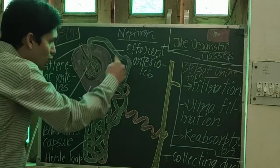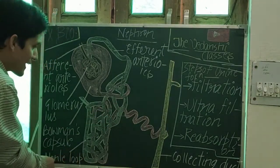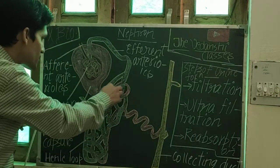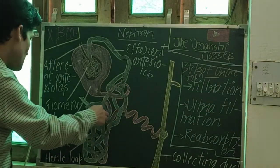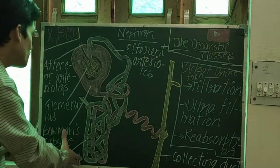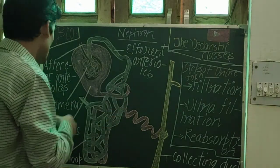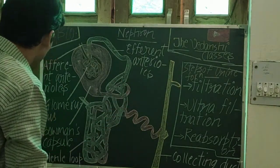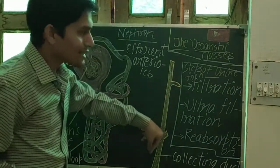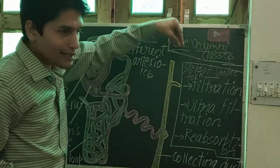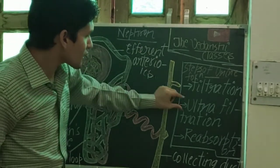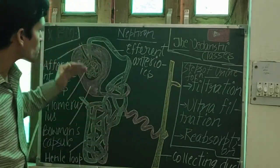This is the highly coiled structure that is called the Henle loop. And this is the collecting duct. After the filtration, ultra-filtration and reabsorption processes occur.